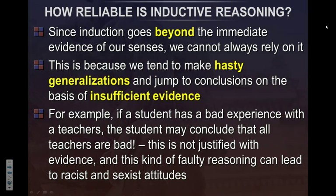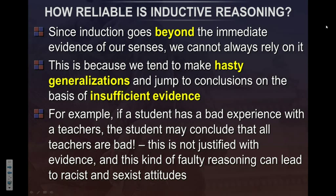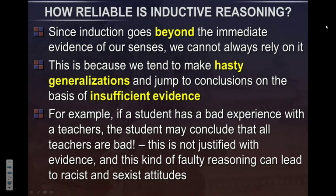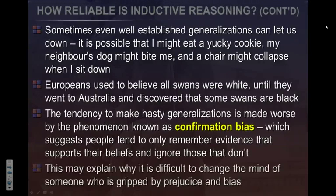That's the fallacy of jumping to a conclusion too quickly based on insufficient evidence. For example, a student has a bad experience with a teacher — maybe it's me — and concludes 'all teachers are bad.' That's not justified; it's not based on enough evidence. This kind of hasty generalization can lead to things like racism and sexism, where someone makes a sweeping conclusion based on poor evidence.